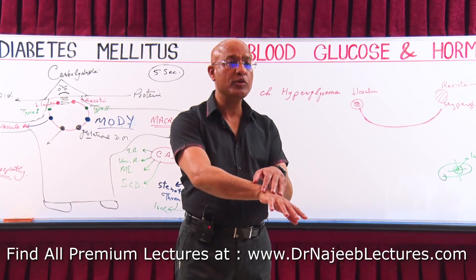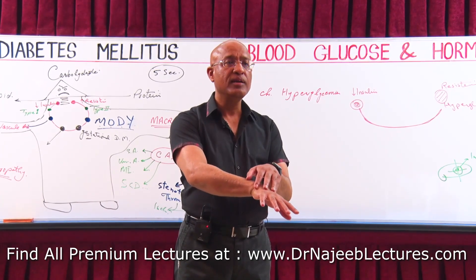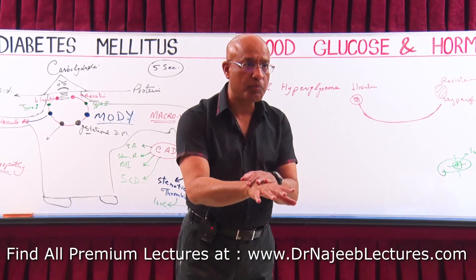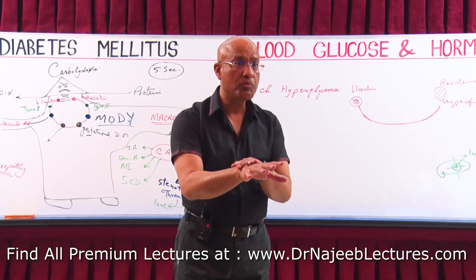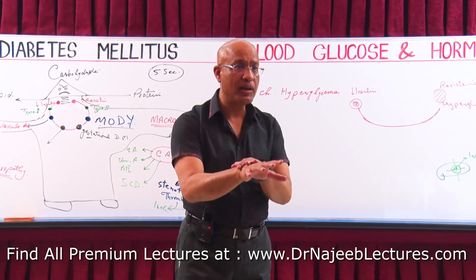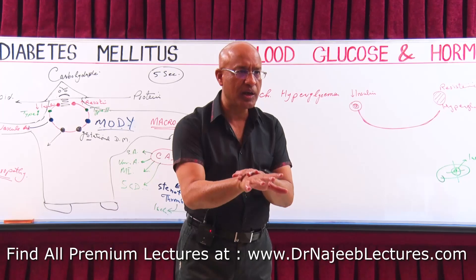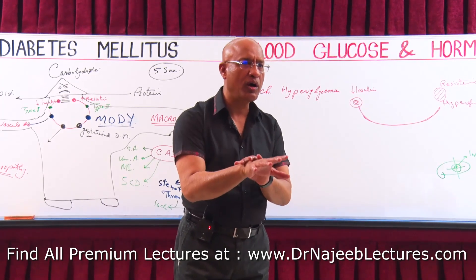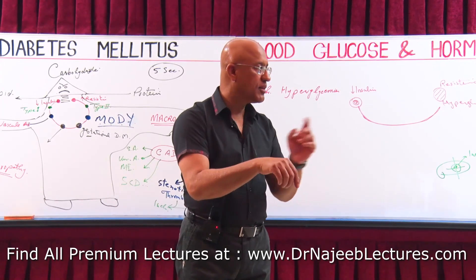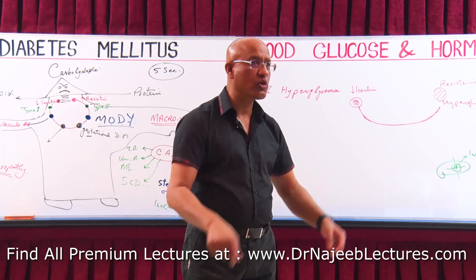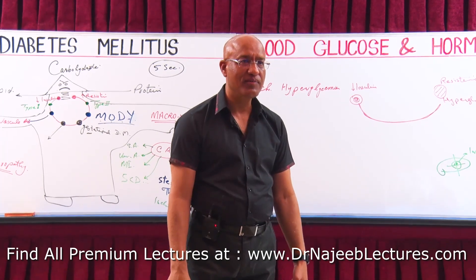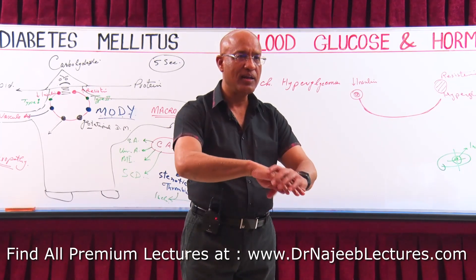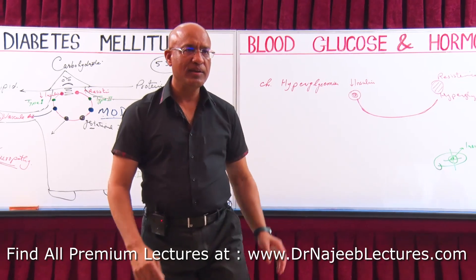That is why diabetic neuropathy is one example of polyneuropathy — peripheral, symmetrical polyneuropathy — also called gloves and stocking disease, because it affects the gloves area and stocking areas of the limbs.